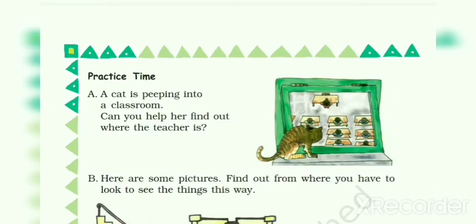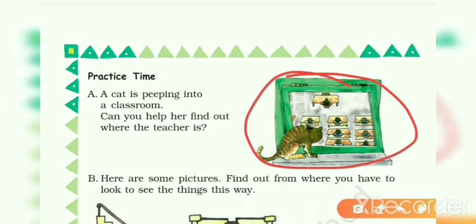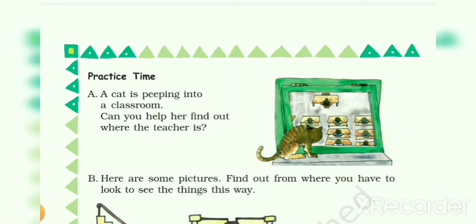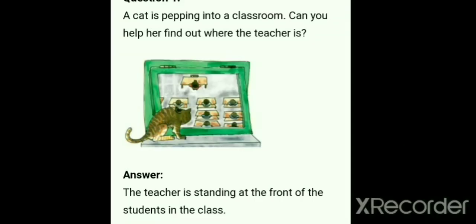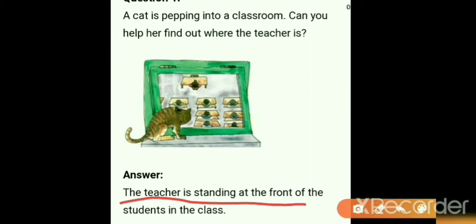Now in the next page is practice time. Here you can see a picture of a cat who is looking inside a classroom. They ask us one question: a cat is peeping into a classroom — can you help her to find out where the teacher is? The teacher is always in front of the students and at the front of the classroom. You have to write the answer in your textbook: the teacher is standing at the front of the students in the class.